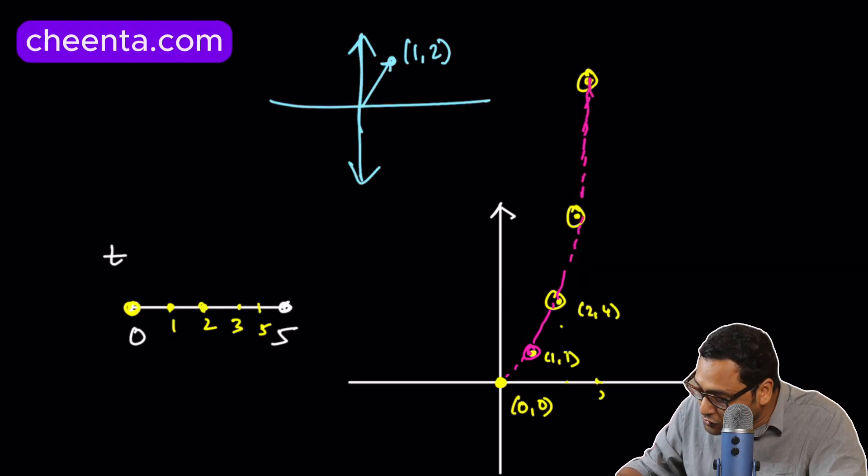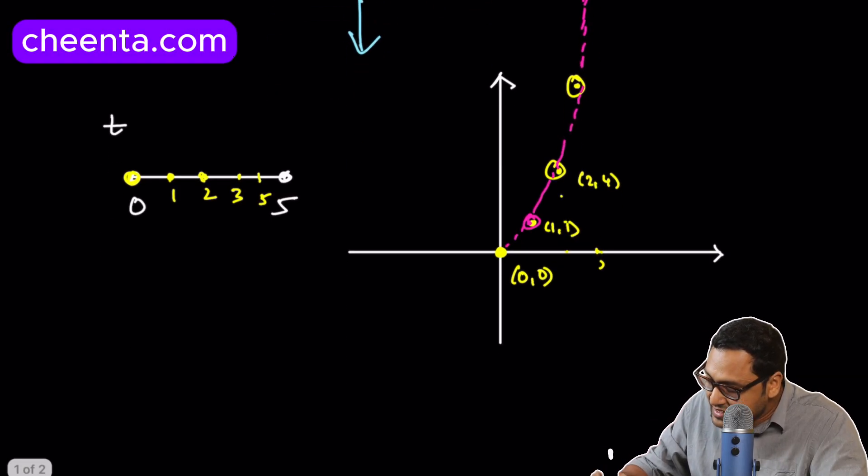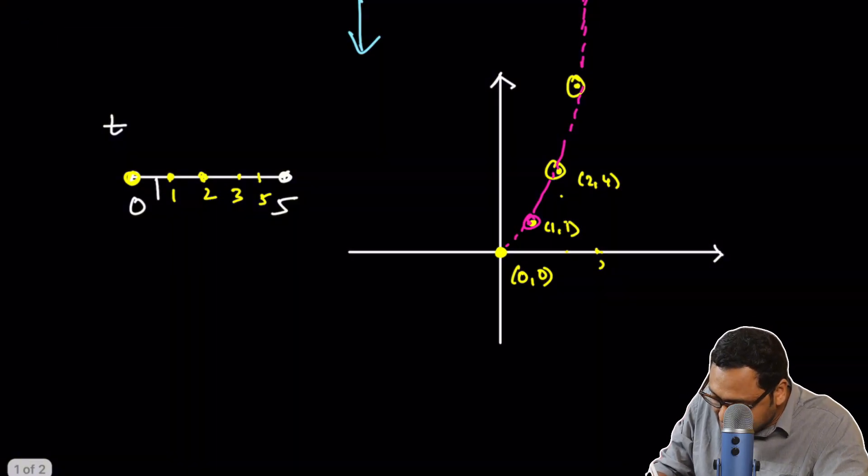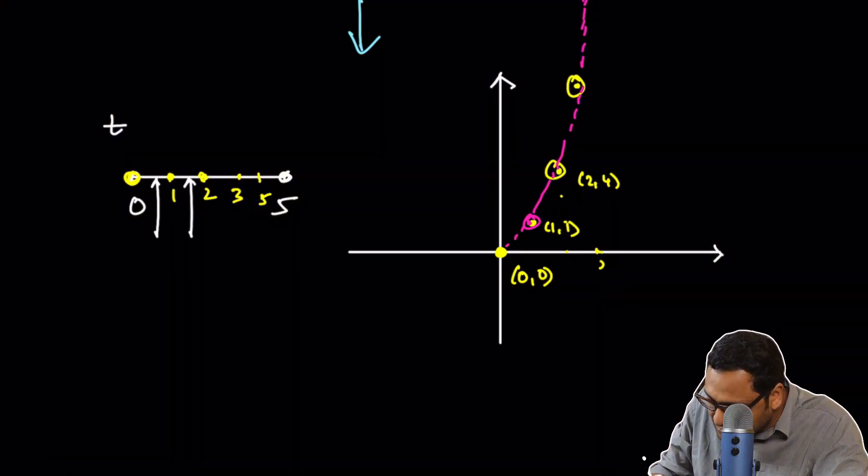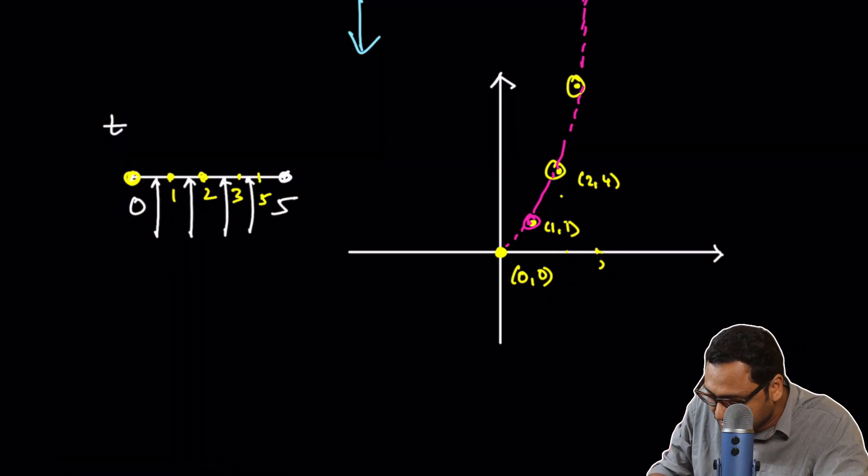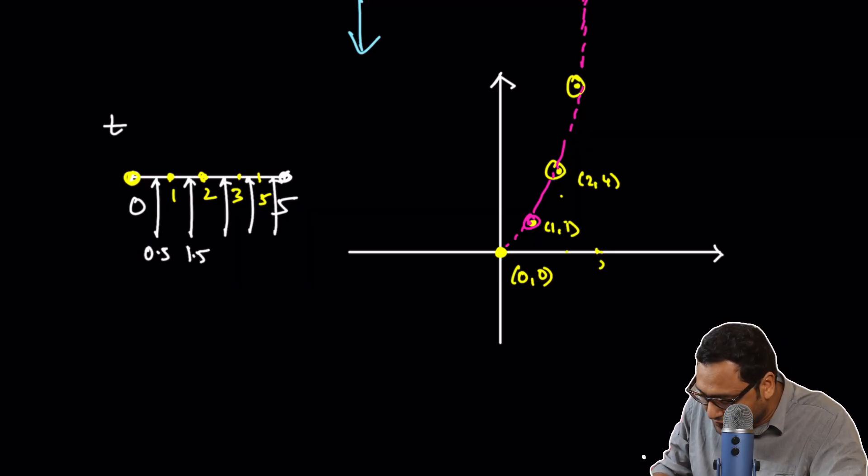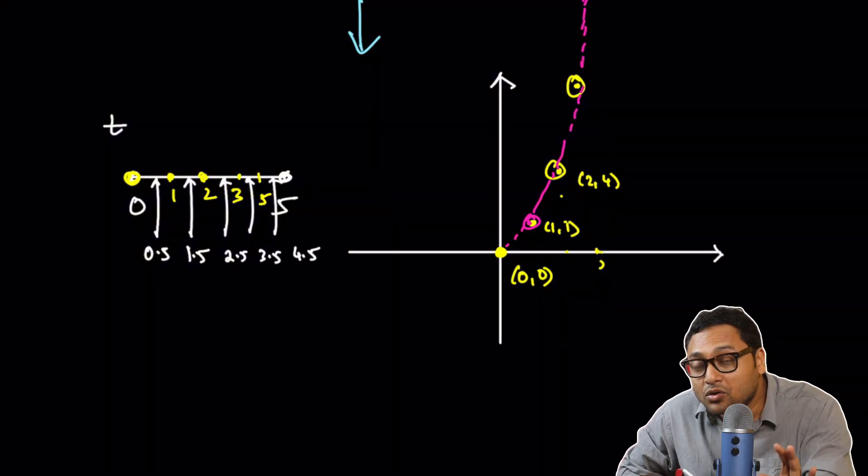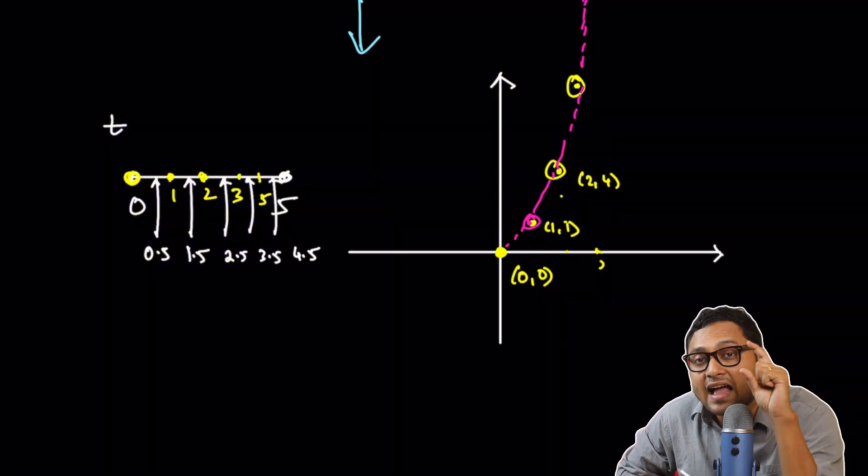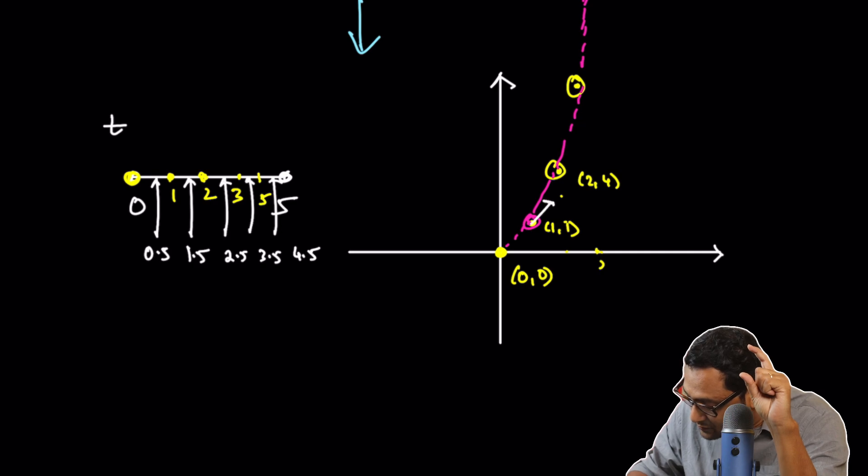Now, what I'm going to do is, I will be picking points which are midpoints of each of these sub-intervals. Let's say 0.5, 1.5, 2.5, 3.5, 4.5.